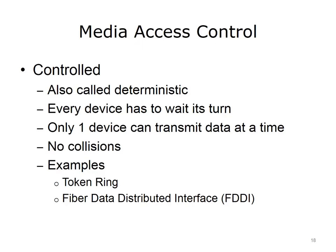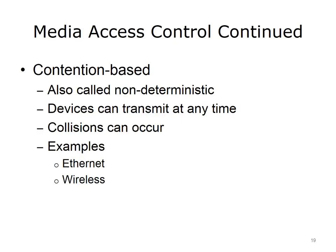A MAC address is a unique address assigned to most network interface cards, NICs, by the manufacturer for identification — also known as the physical address. MAC addresses are in hexadecimal format, containing 48 bits or 12 hex digits. The first 24 bits, or 6 hex digits, are called the Organizational Unique Identifier, OUI. Each vendor that produces NICs is assigned their OUI by the Institute of Electrical and Electronics Engineers, IEEE. The remaining bits are unique for each OUI and are assigned by the vendor.